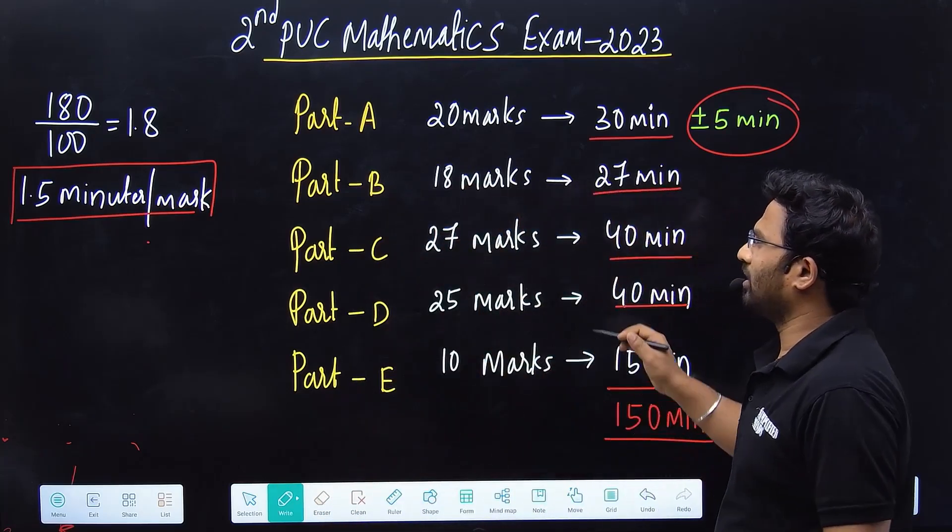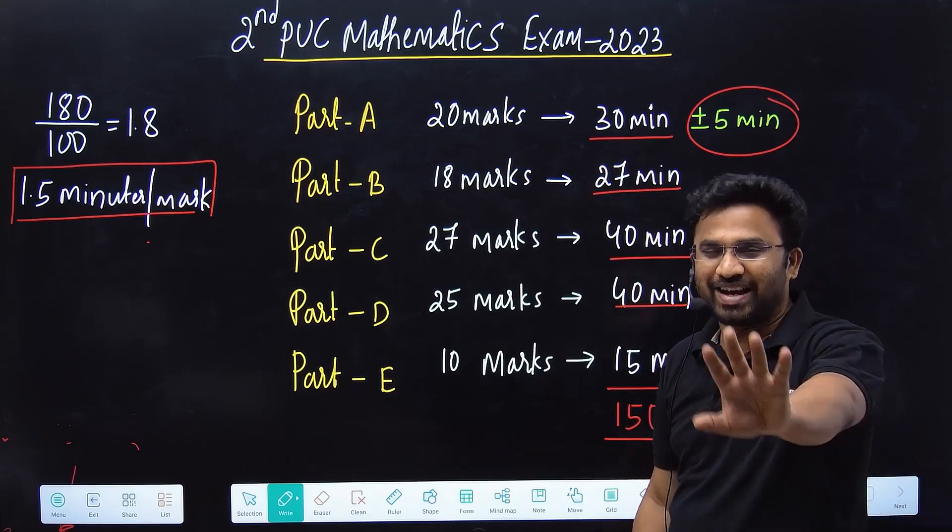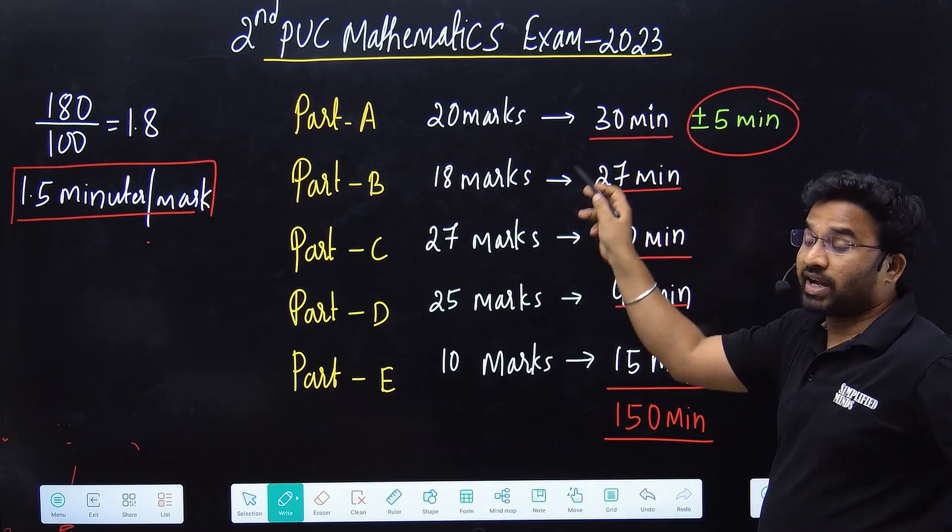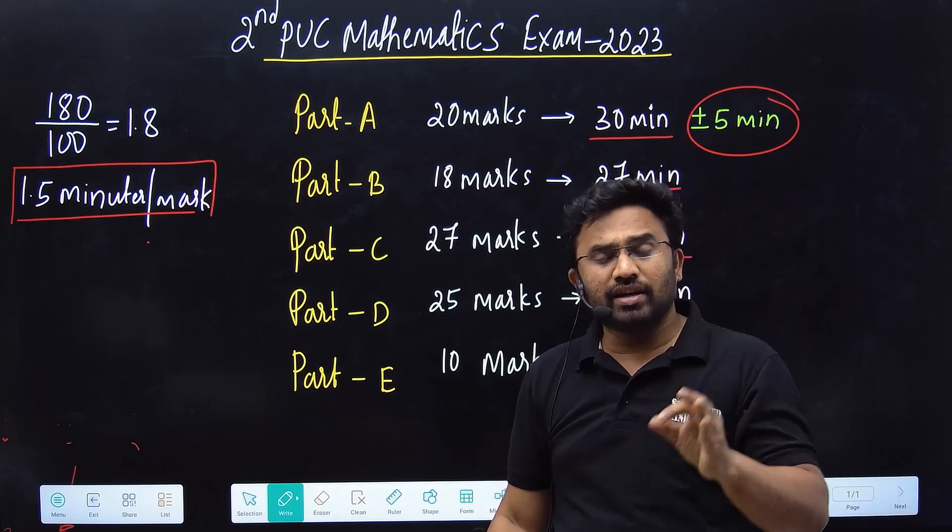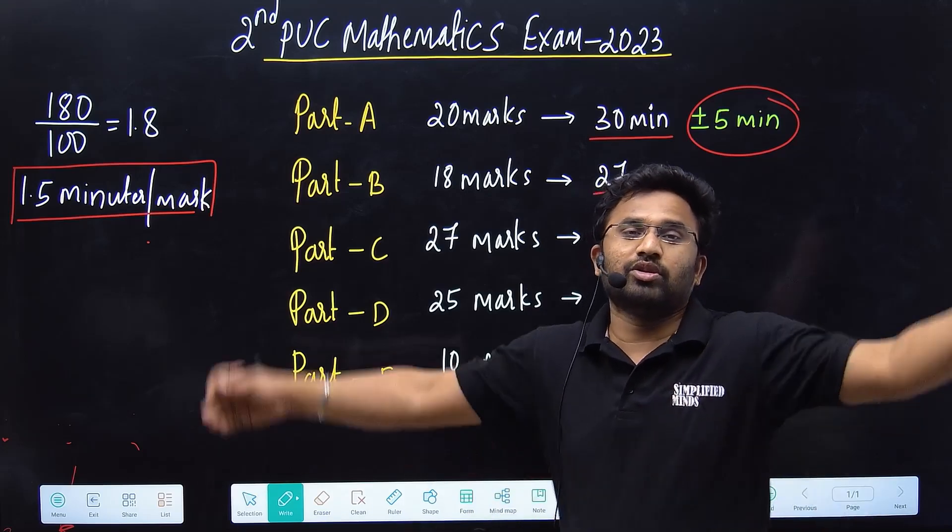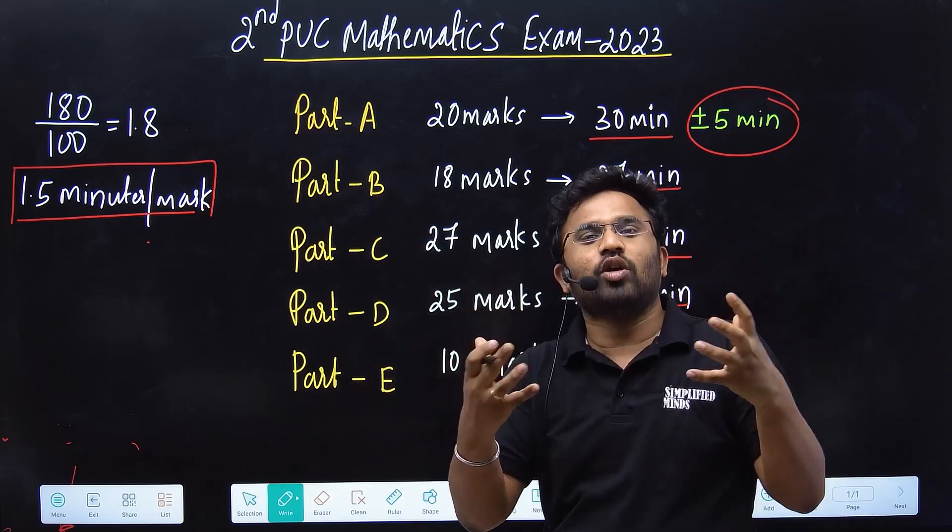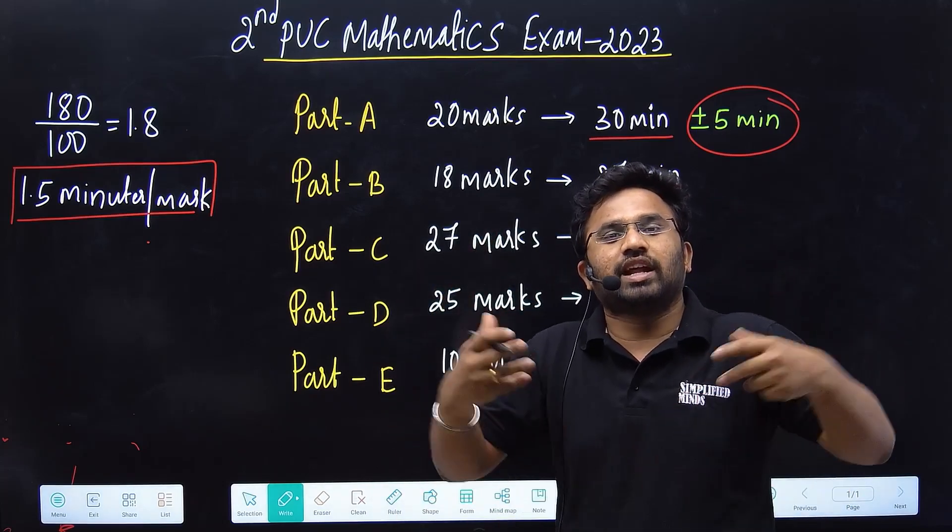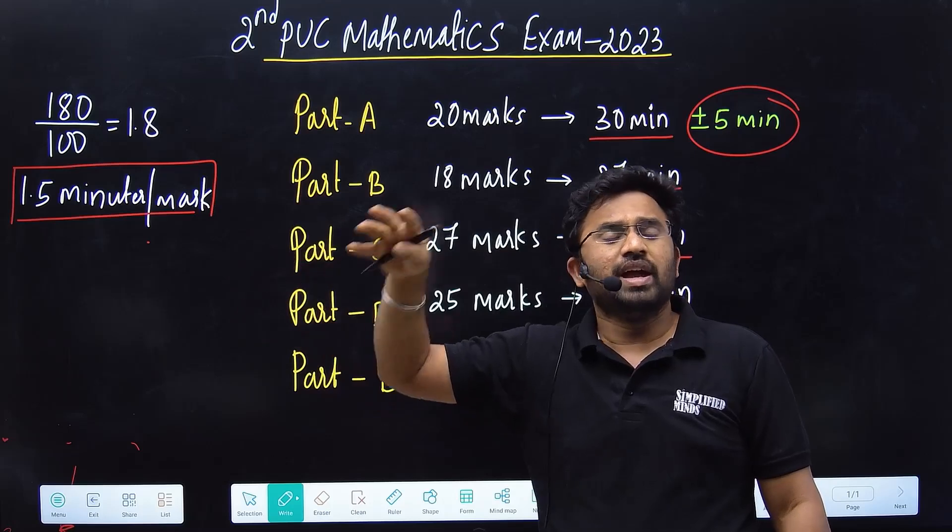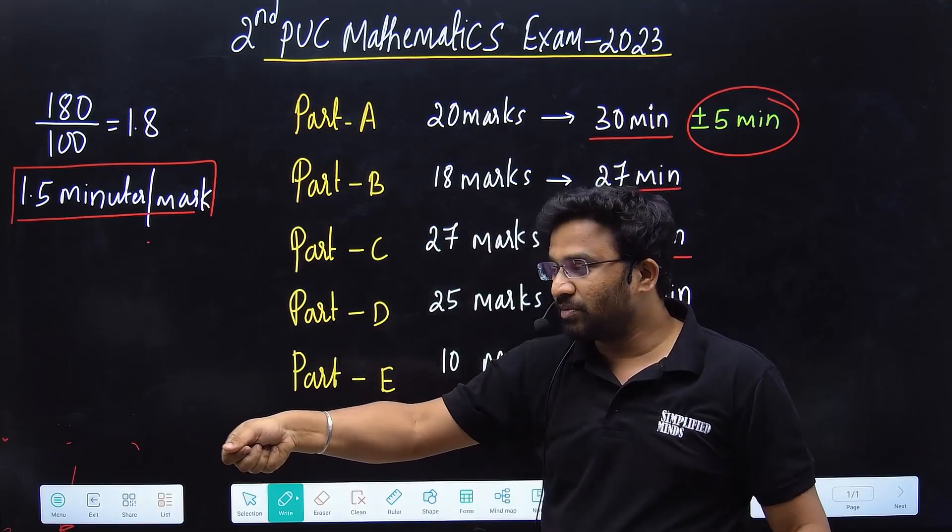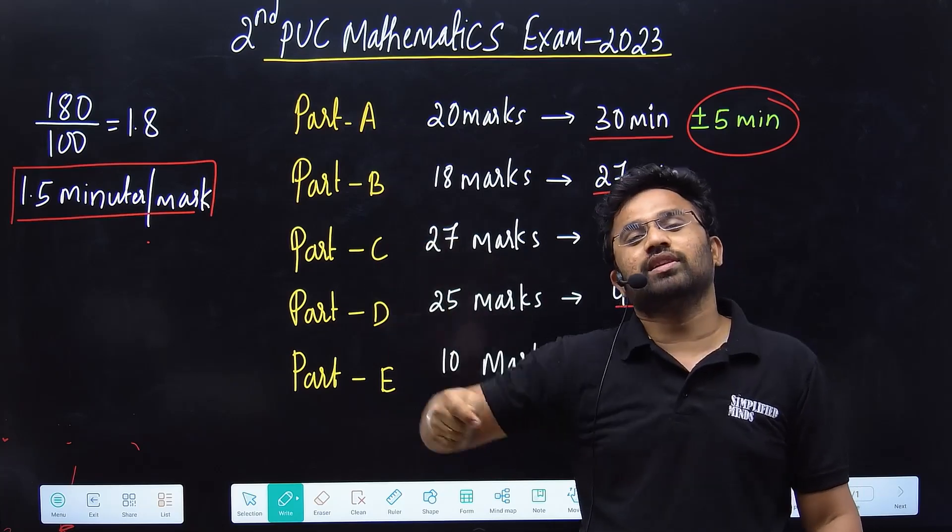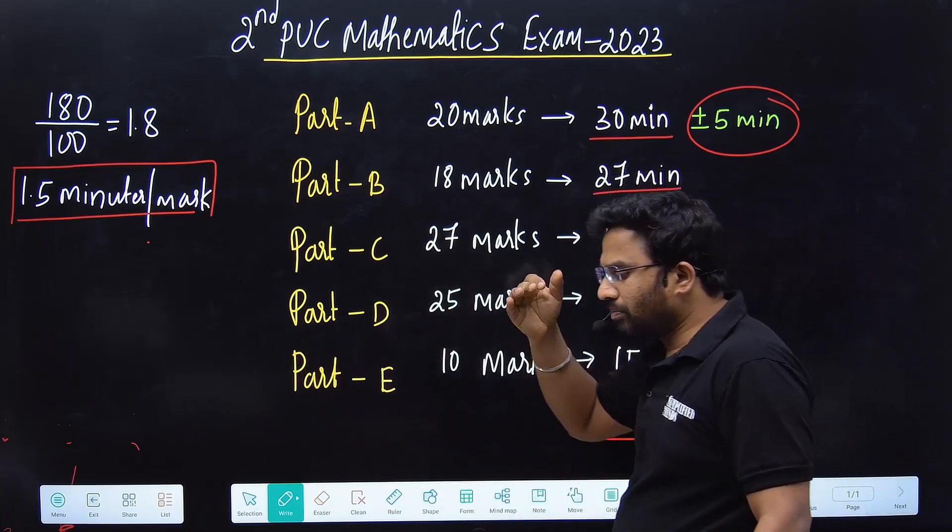This is the maximum time you can provide for any section. Time is everything here. If you're targeting 100, definitely finish at least 15 or 20 minutes before, so you have time for revision to check if anything is missing. Please mentally prepare which part you have to attend first, because first impressions are always the best impression. When the examiner corrects papers, if the first section is correct, they'll be in a good mood.